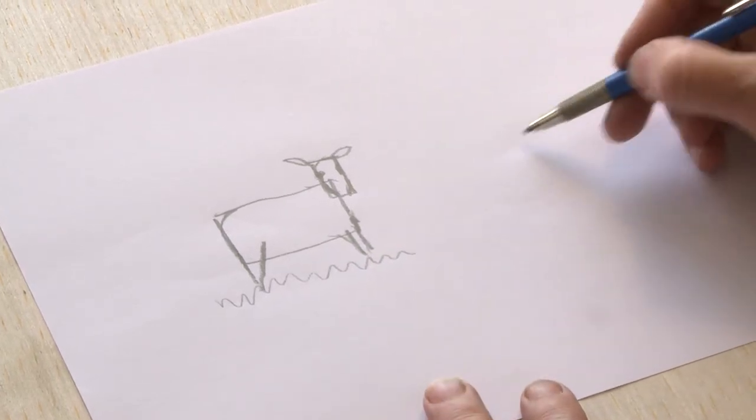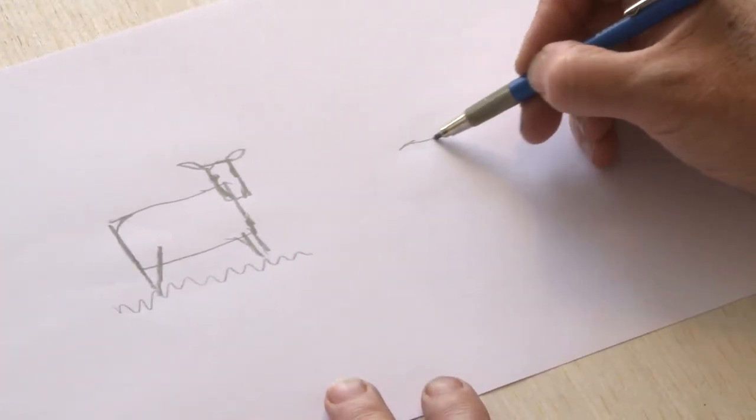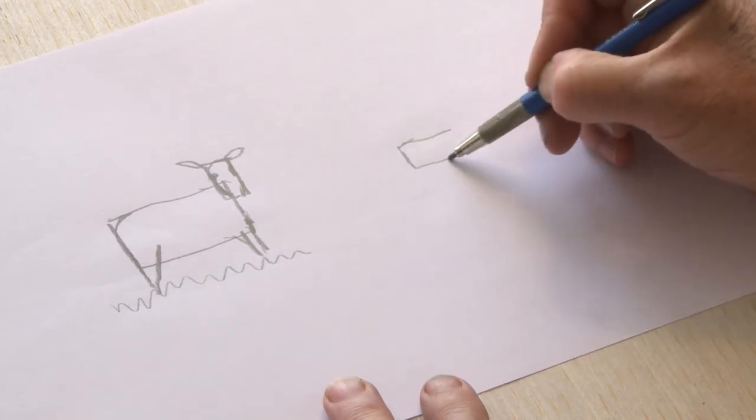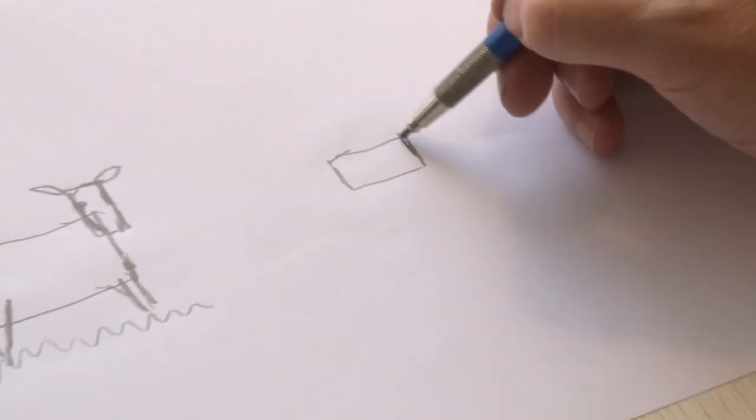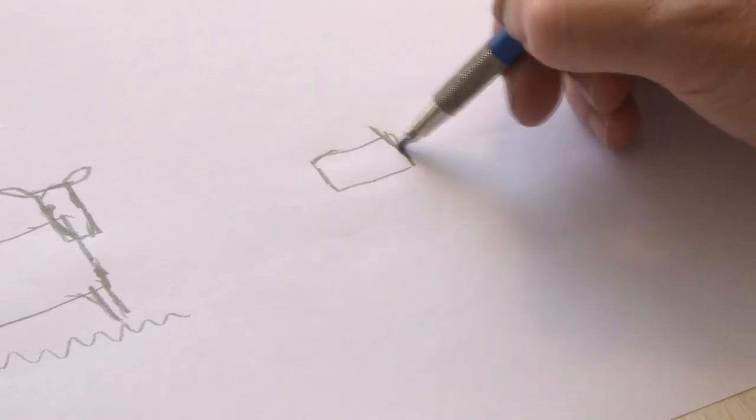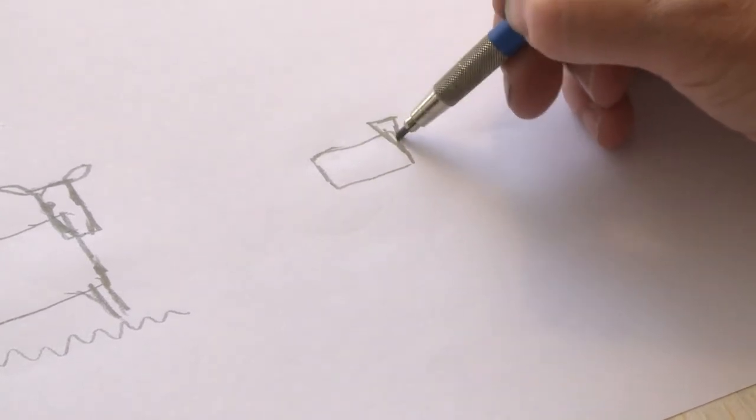Sheep, a little bit smaller but the same sort of thing, a rectangle to start with, but these have more, a triangular head, smaller triangular shape for the head.